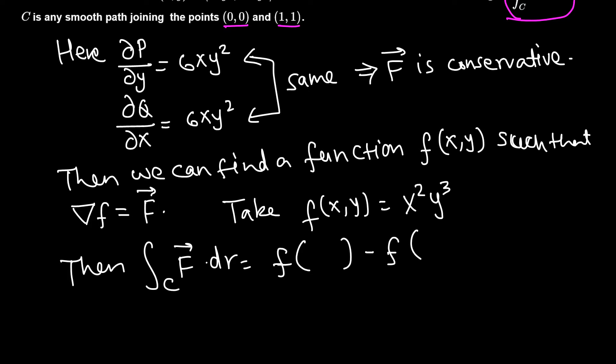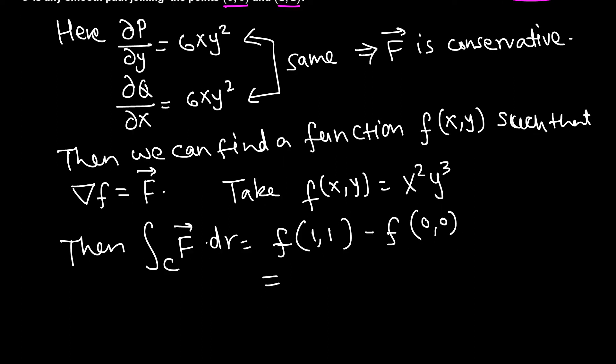So (0,0) to (1,1), so (1,1) terminal point, (0,0) initial point. Now let's evaluate it: (1,1), (1,1), just 1, minus 0 times 0, 0, so the answer is 1.